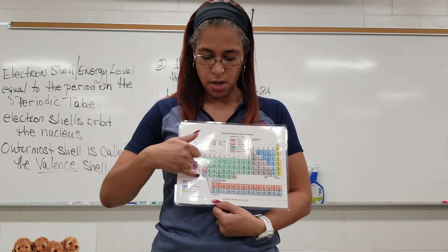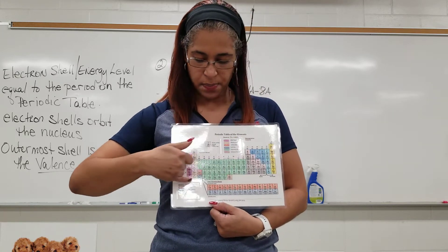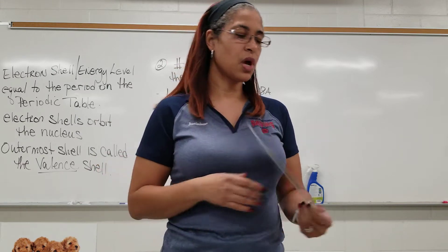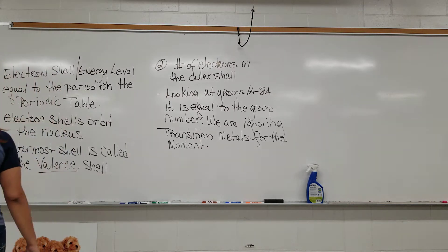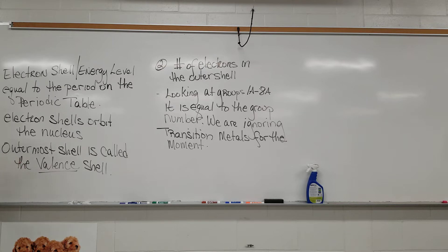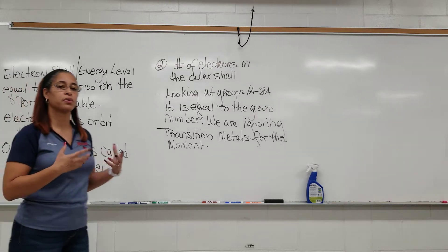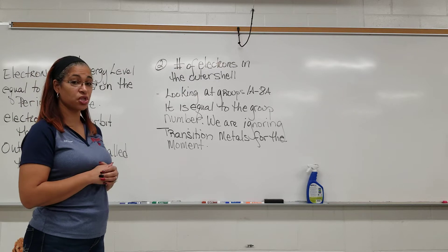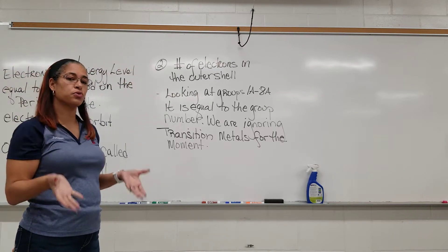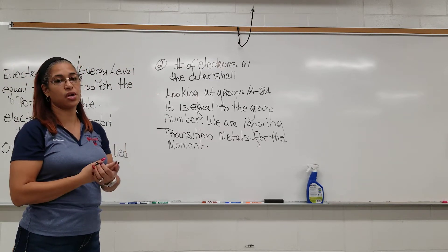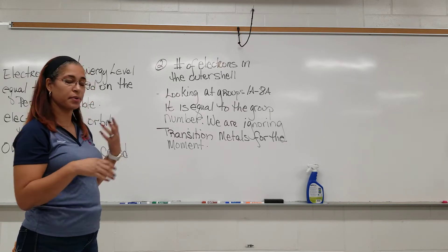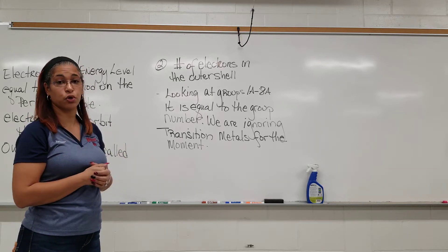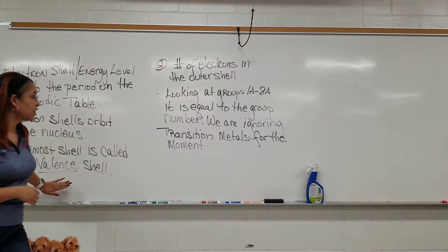We have seven periods, so the last period has seven shells. Electron shells orbit the nucleus and the outermost shell is called the valence shell. The valence shell is the outermost shell and it is the shell that is involved in reactivity — when we're looking at chemical reactions, the shell involved is called the valence shell.